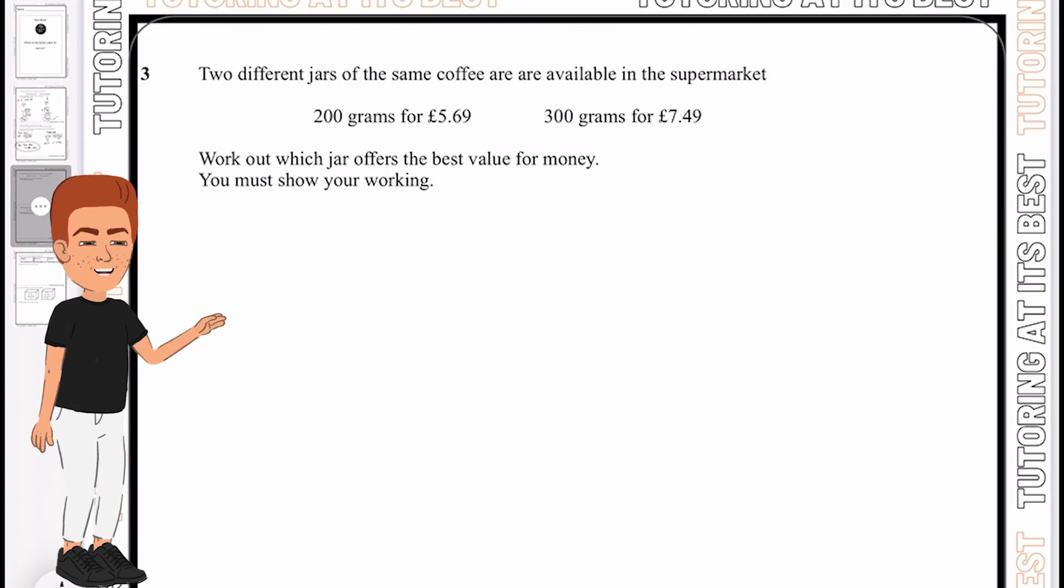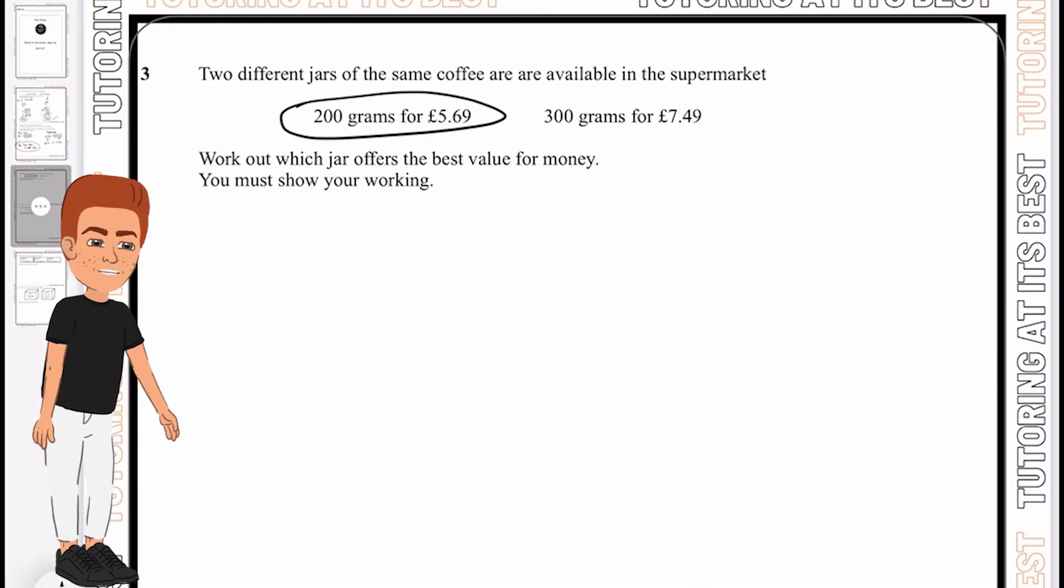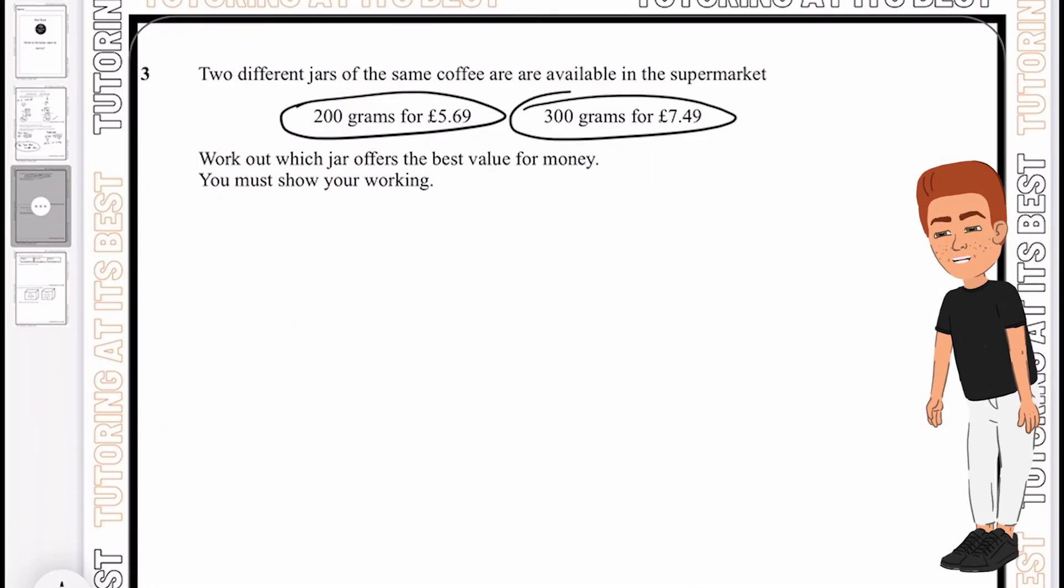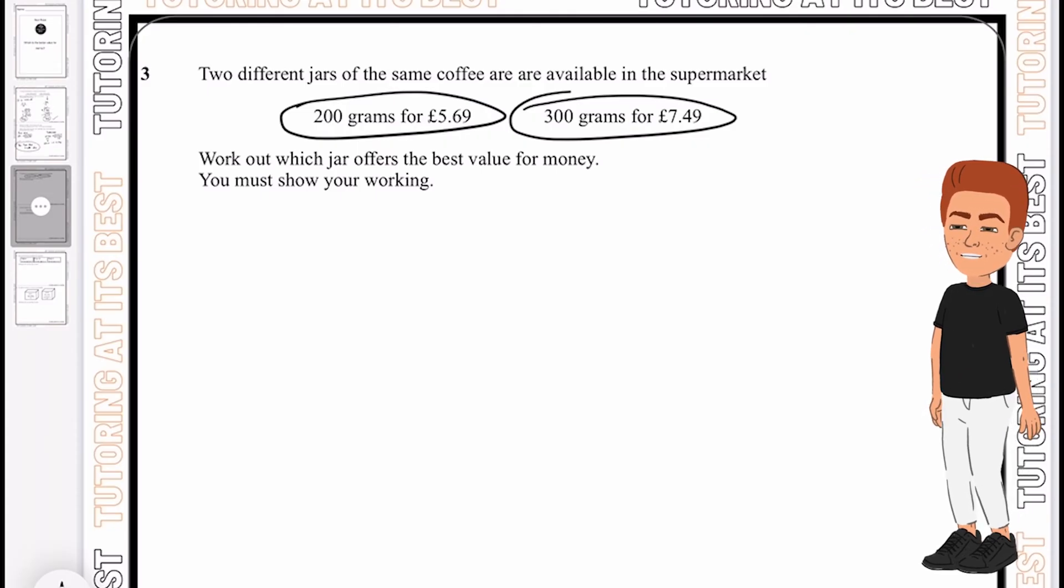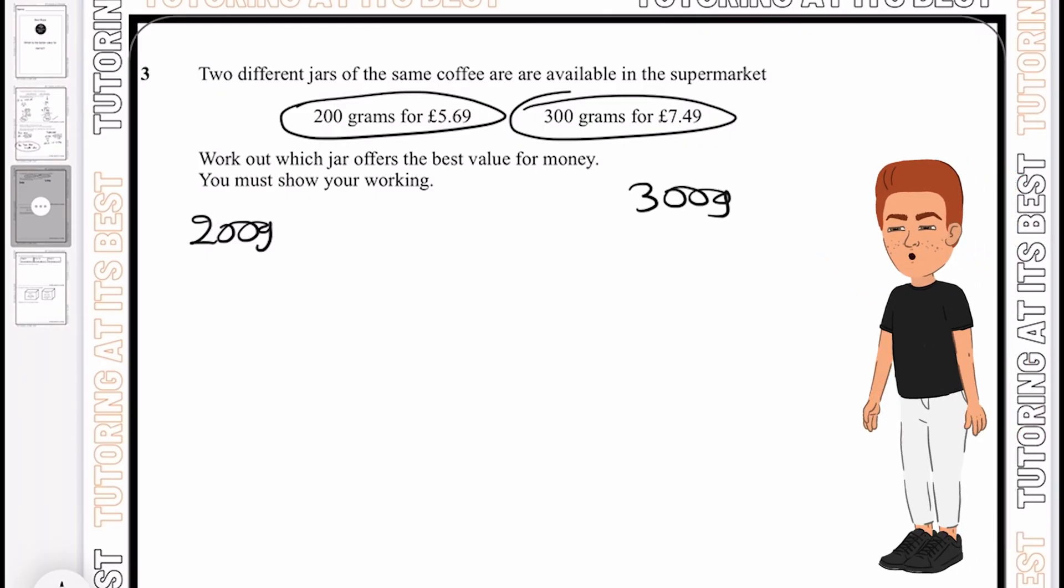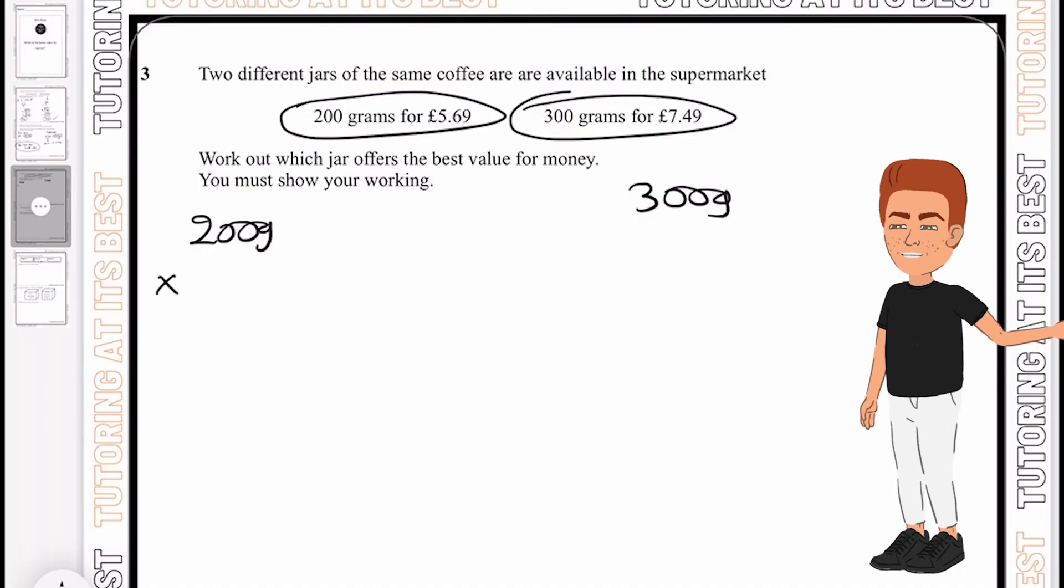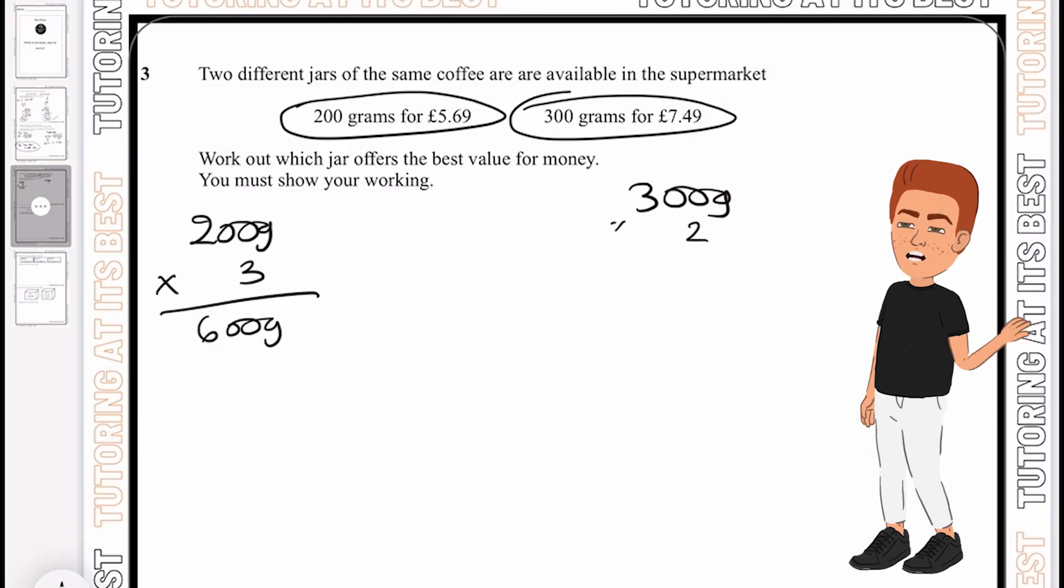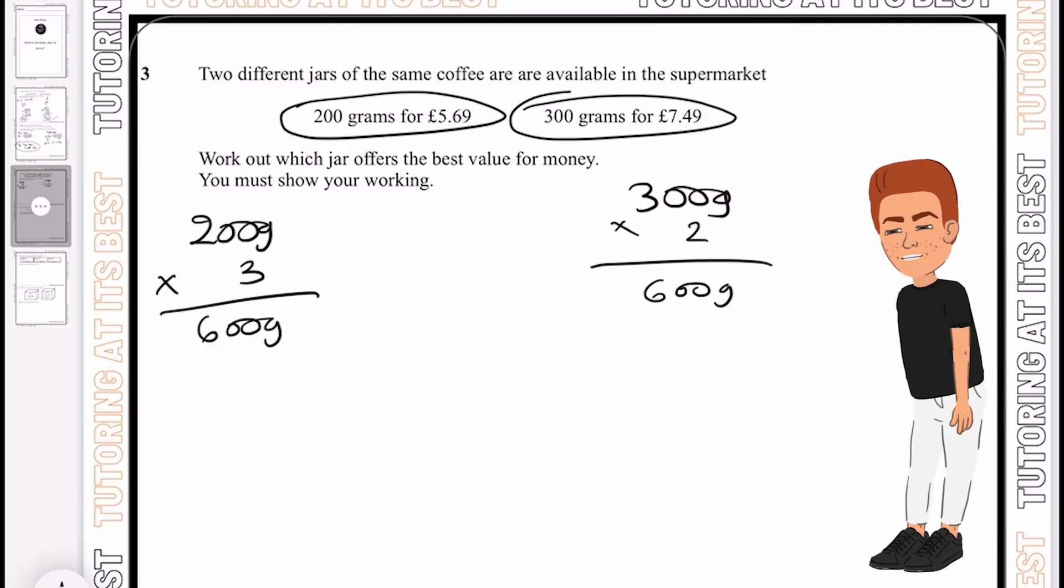We have two different jars of the same coffee: 200 grams for £5.69 and 300 grams for £7.49. We need to work out which jar offers the best value for money. I'm going to make this the same by multiplying 200 grams by 3 to get 600 grams and 300 grams by 2 to get 600 grams.